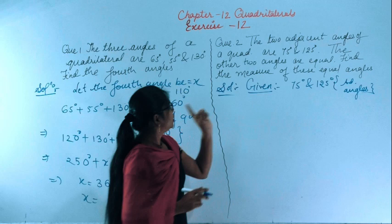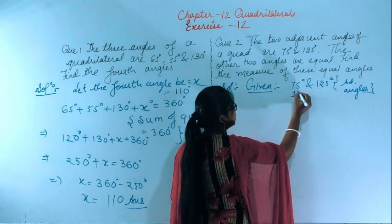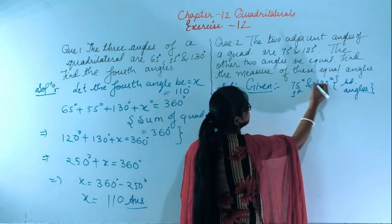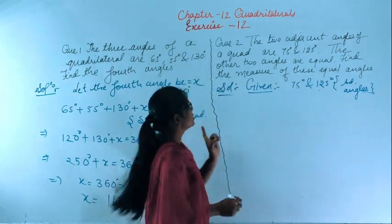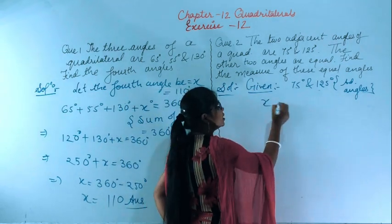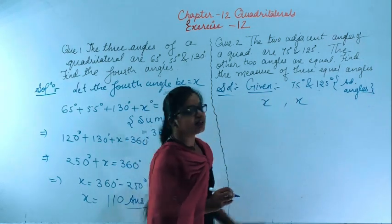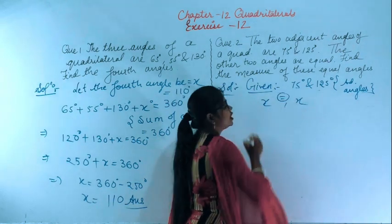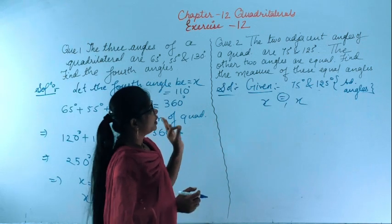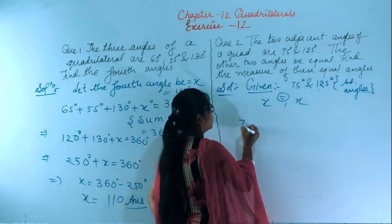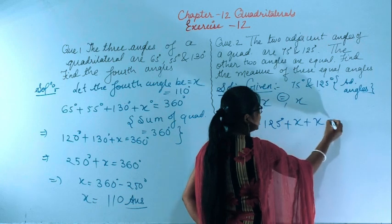For the solution, we are given 75 degrees and 125 degrees as adjacent angles. The other two angles are equal. If we take one as x, the other will also be x. We know that the sum of angles in a quadrilateral is 360 degrees. So we write 75 degrees plus 125 degrees plus x plus x equals 360 degrees.